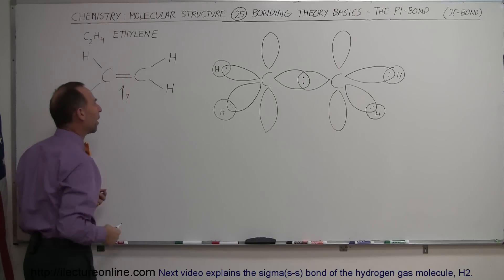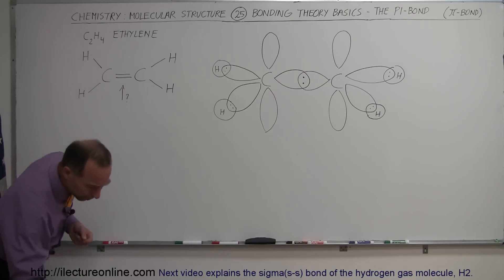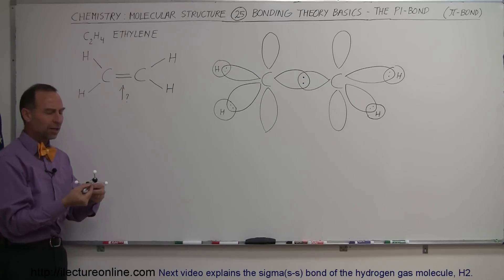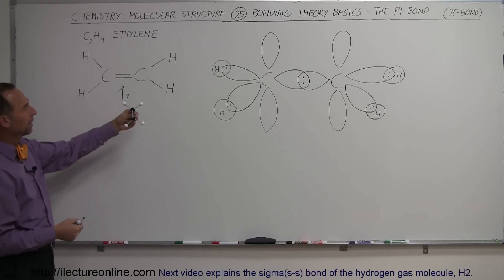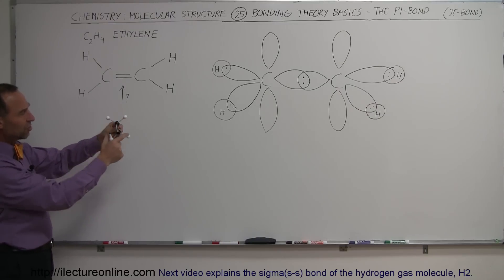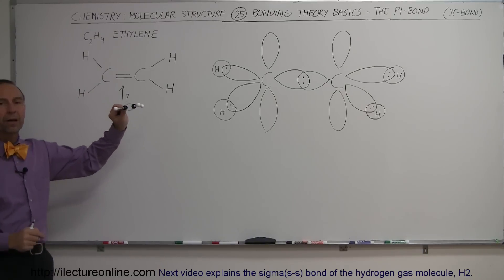And traditionally, we think of it as a double bond. And how we usually think about a double bond, I have a little illustration of that here. Here's the ethylene molecule, two carbons, they each have two hydrogens, and then to form the bond between the two carbons, we think of it as a double bond like that.